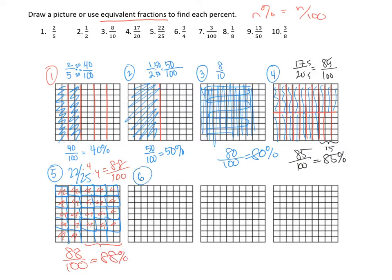For number 6, we're looking at 3 fourths. If I split this into fourths, each fourth has really 25 squares in it. So that's going to be 75 hundredths, which is 75%. We could also write 3 fourths, multiply by 25 to make it hundredths, and get it that way as well. For number 7, we have 3 hundredths — just three little sections there — so that's 3%. You can tell that's tiny compared to the whole, which would be 100%.